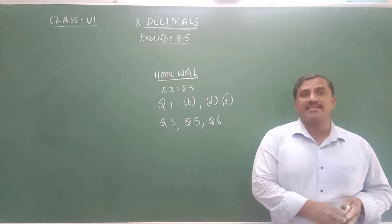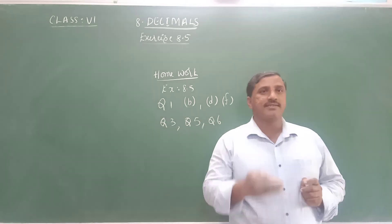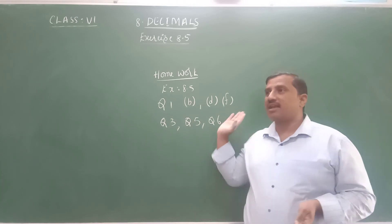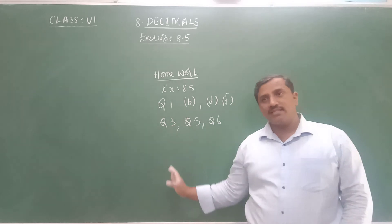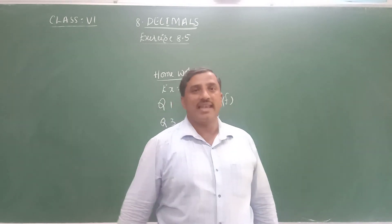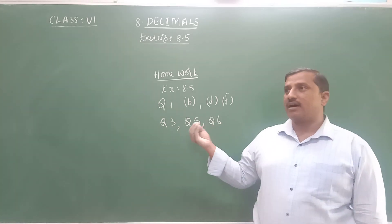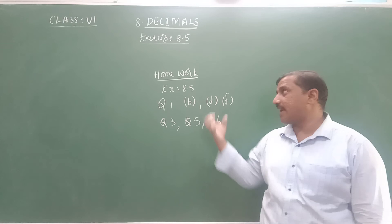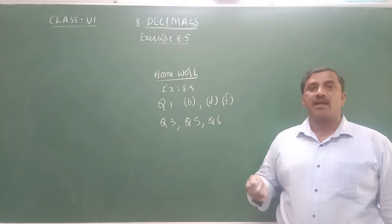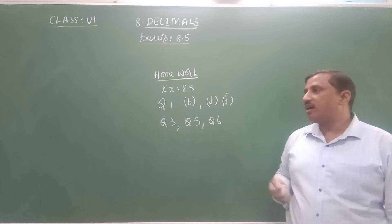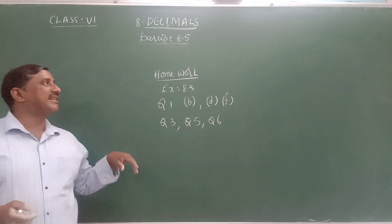I hope you understand today's concept — that is, addition of decimals. What we did: just as we add whole numbers, we add decimals in the same way — from right to left, that is, thousandths place, then hundredths, tenths, ones, tens, hundreds, thousands, ten lakhs, and so on. While adding, we must write the decimals at the correct places. Then we can add the decimals correctly. This is about addition of decimals, and we solved some problems and word problems from exercise 8.5.